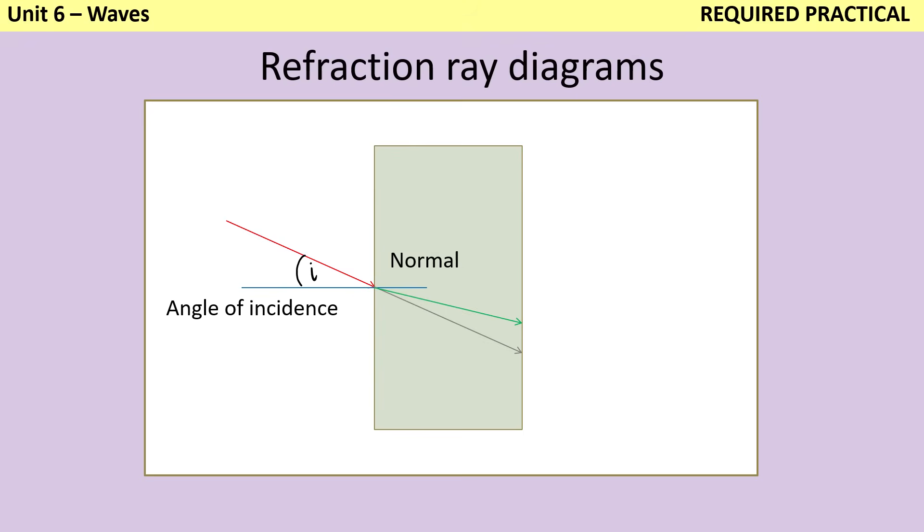My glass block is denser than the air that the light started off in, and when light enters a denser medium, it refracts towards the normal. So that's what we see here.